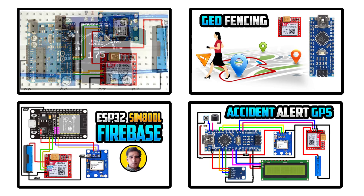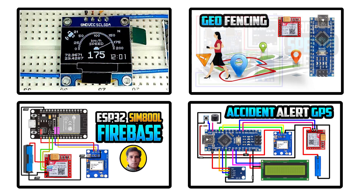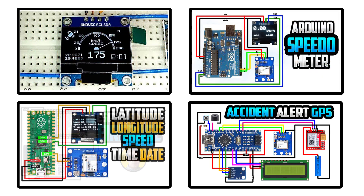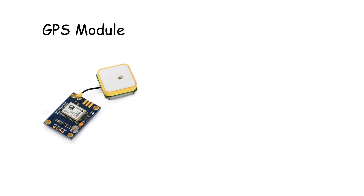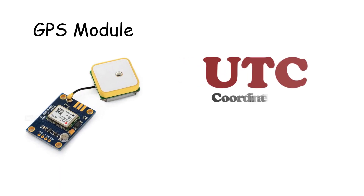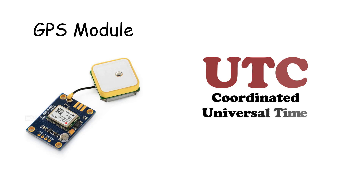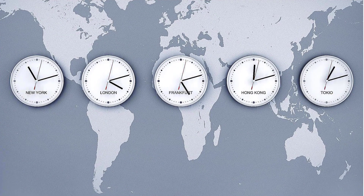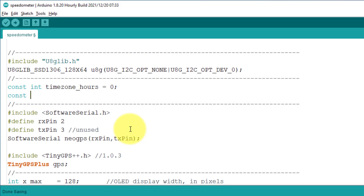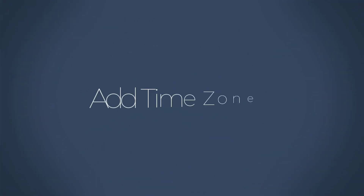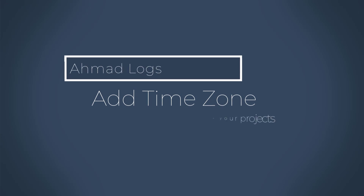I have made some projects earlier that have included a GPS module with some GPS tracking features. The GPS module gives the time in UTC format only. But if you want to add local time to your projects, then you have to add the time zone feature in the code yourself. So if you don't know how to add the time zone in your projects, then this video is for you.